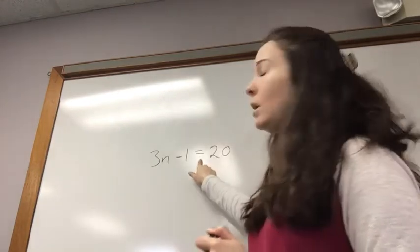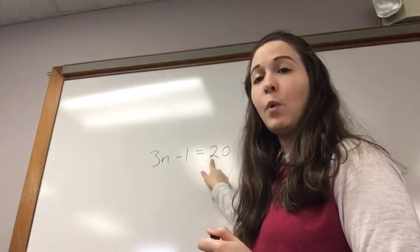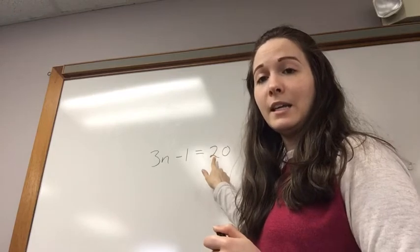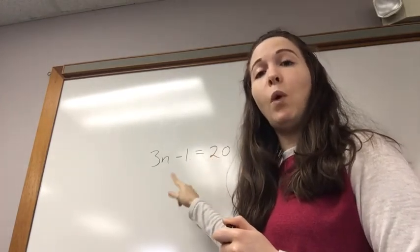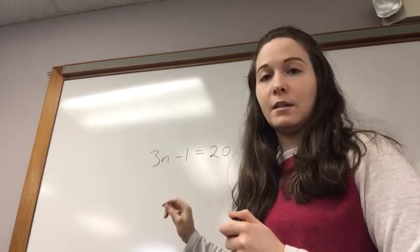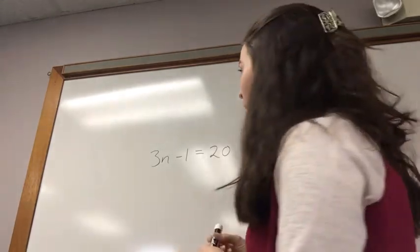Now, remember our equal sign indicates that both sides of our equation are exactly equal. So, our main rule of equations is whatever is done to one side must be done to the other so that they can remain equal.